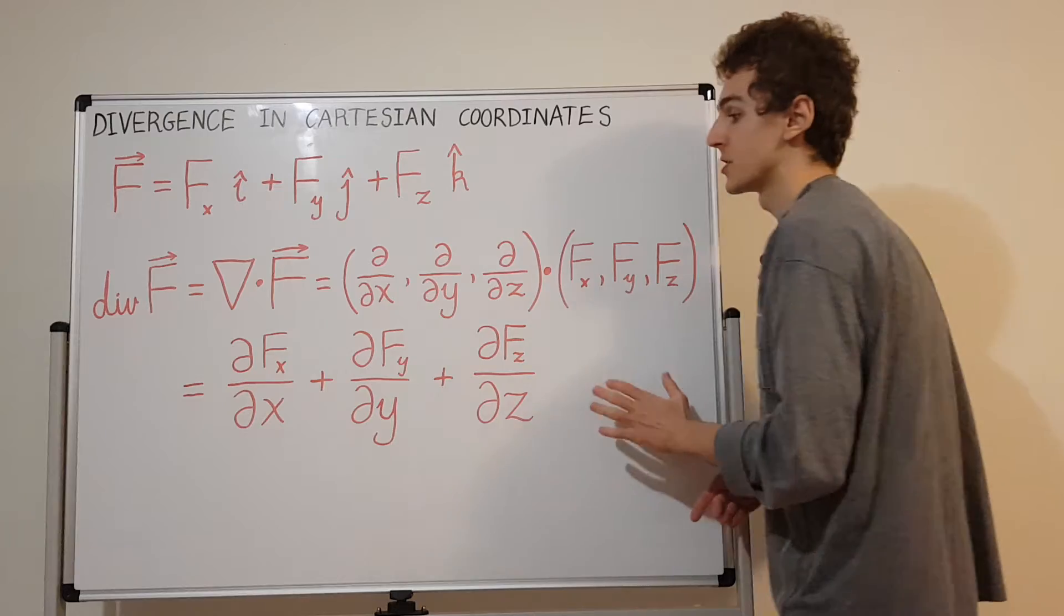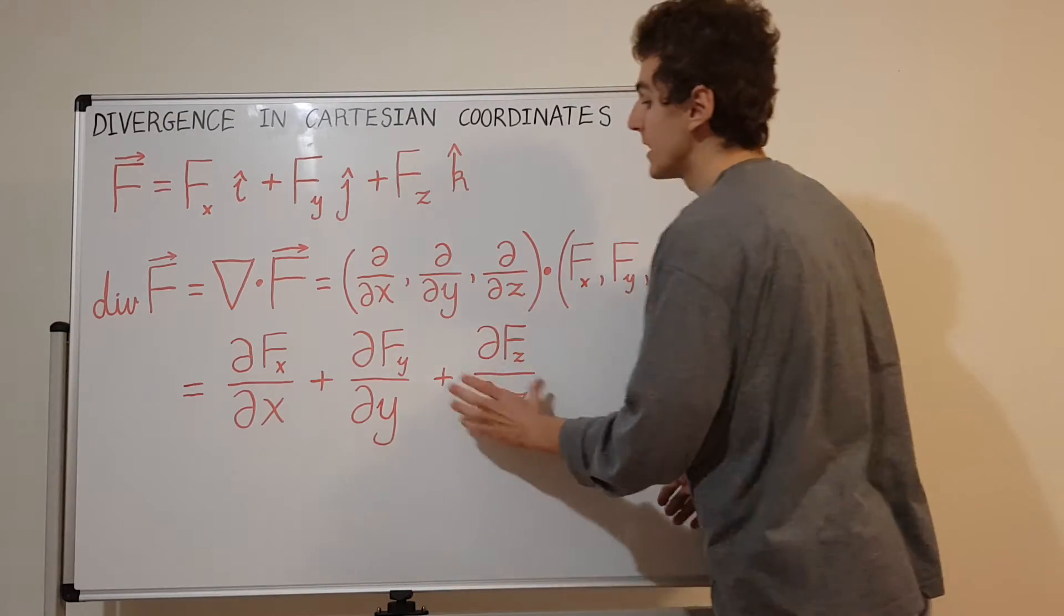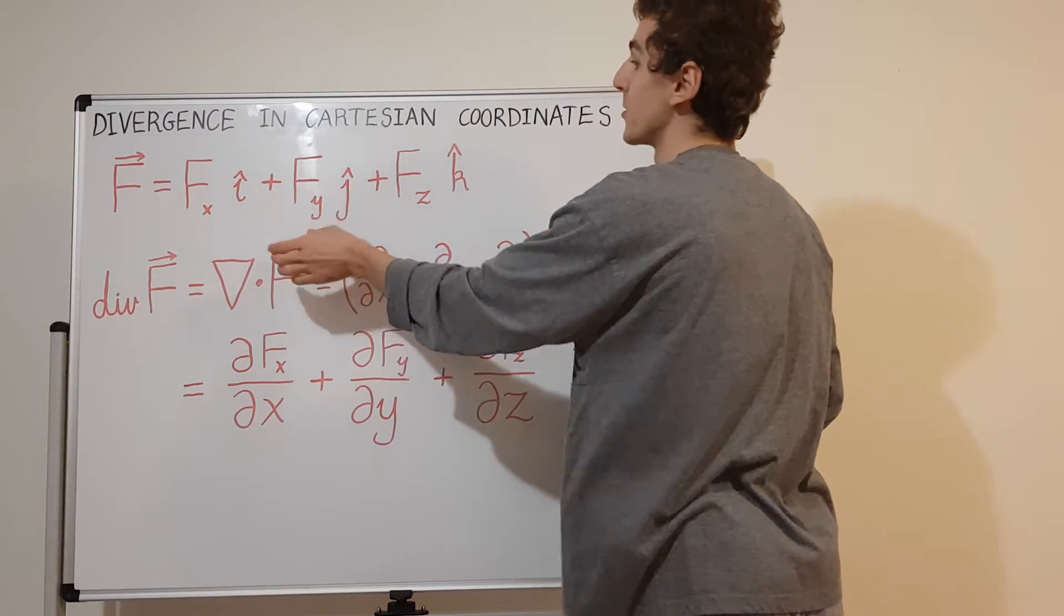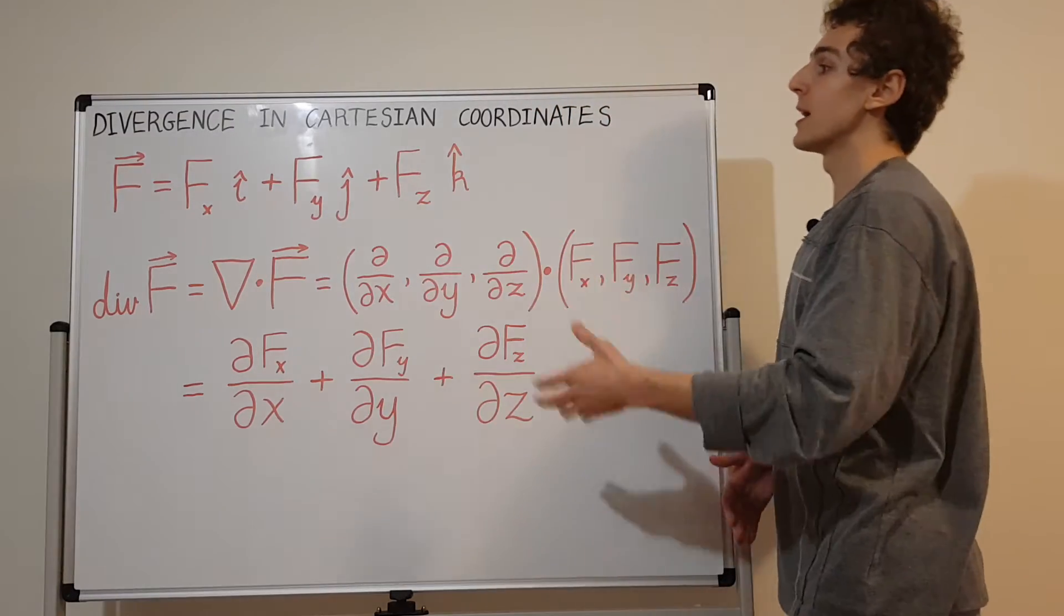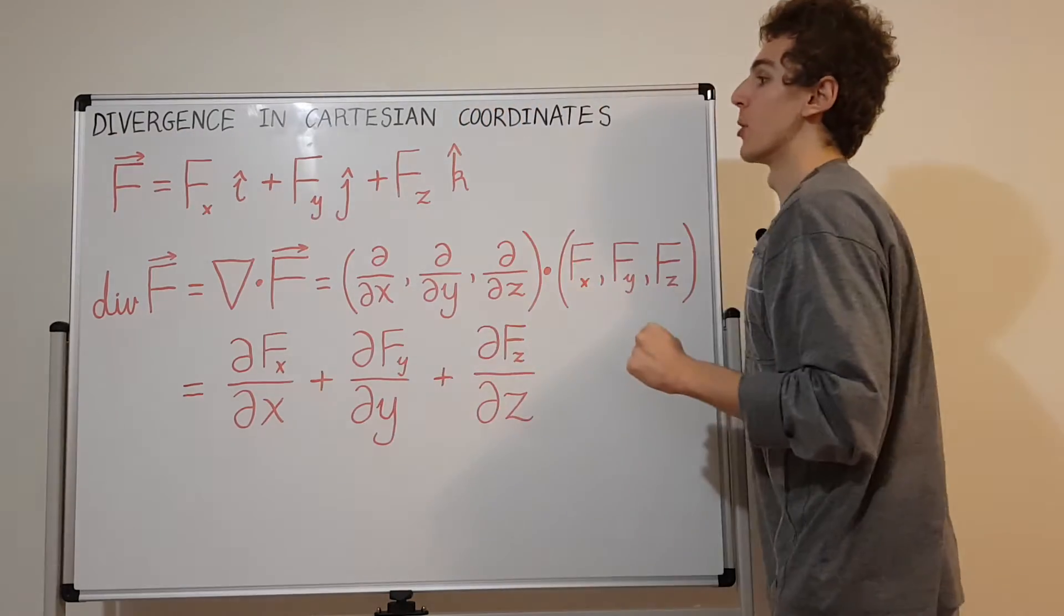So the partial derivative of the X component of the vector field with respect to X plus the same thing for Y and the same thing for Z, that is the divergence. The divergence is actually a scalar quantity because all of these guys are scalar quantities. FX, FY, and FZ, they are scalars. But they're the components of a vector. So F with an arrow on top, that's the vector, and these guys are the components.